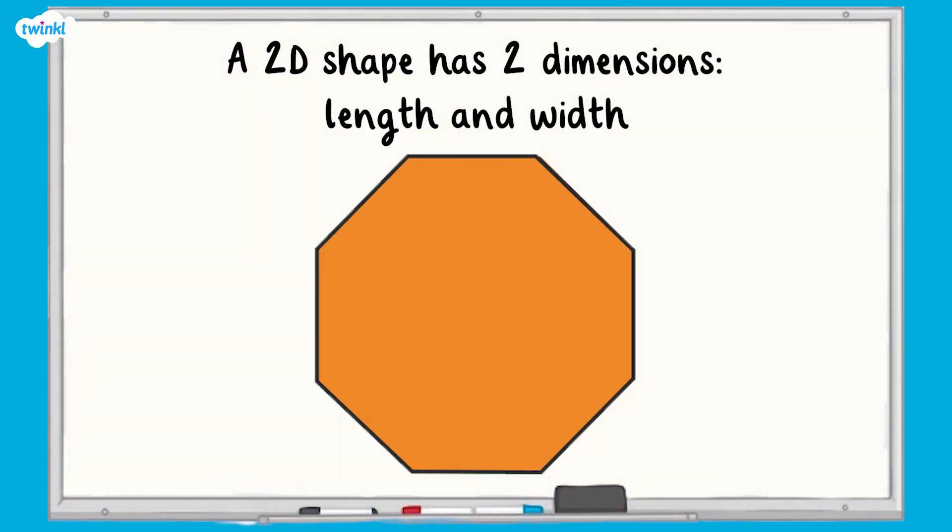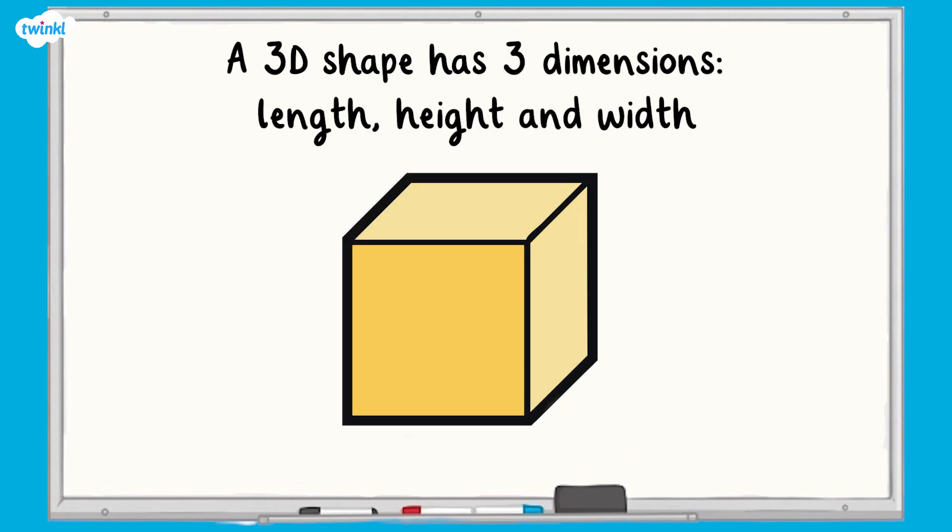A 2D shape has two dimensions, length and width. 2D shapes are flat. A 3D shape has three dimensions: length, height and width. 3D shapes are solid. These are also known as polyhedrons, a 3D shape whose faces are all polygons.